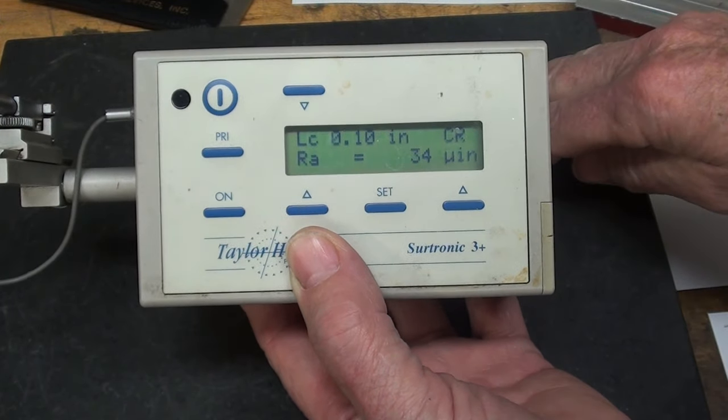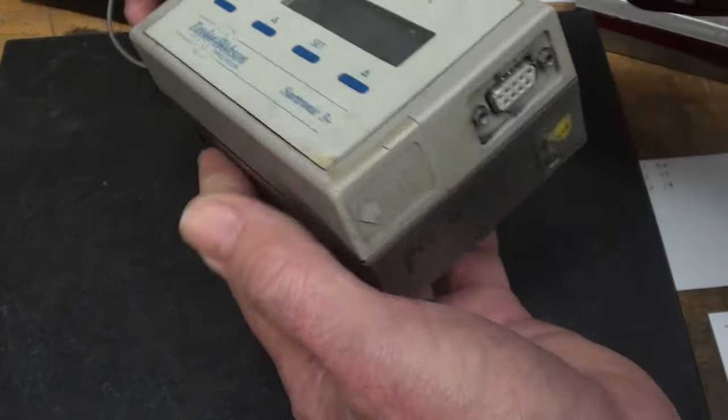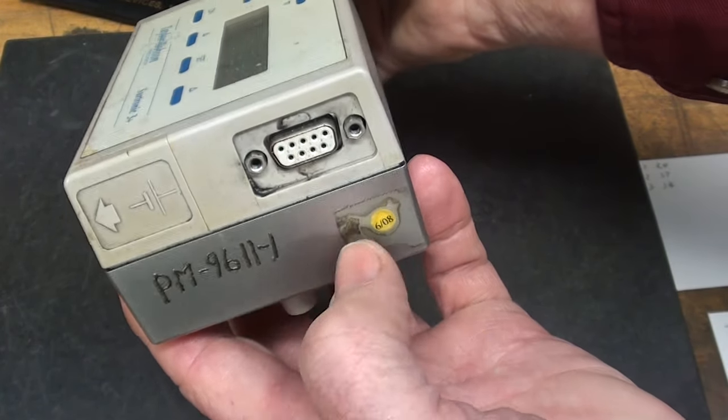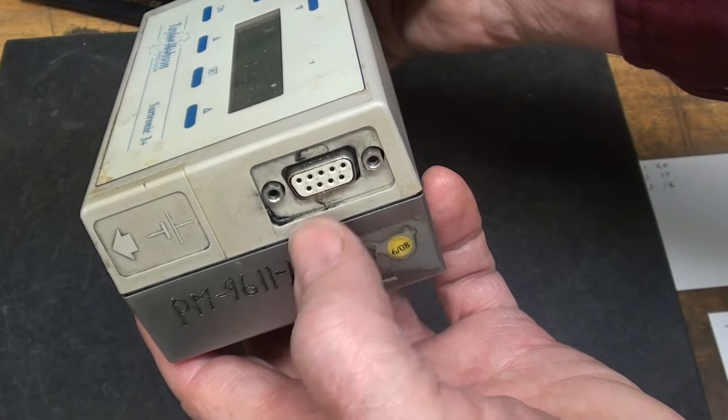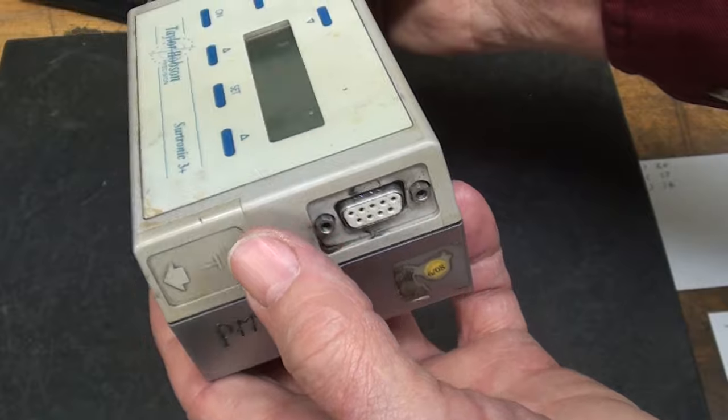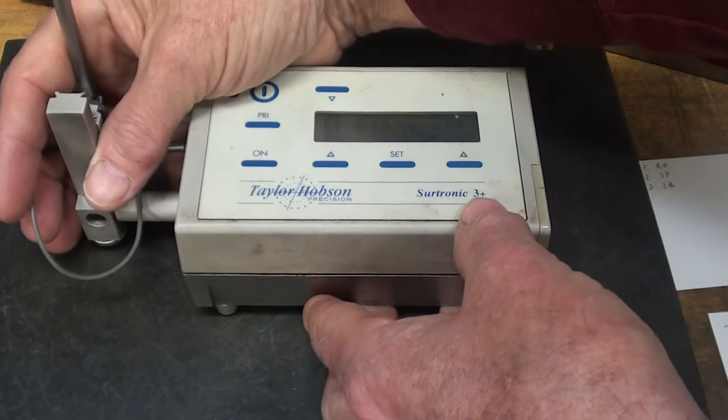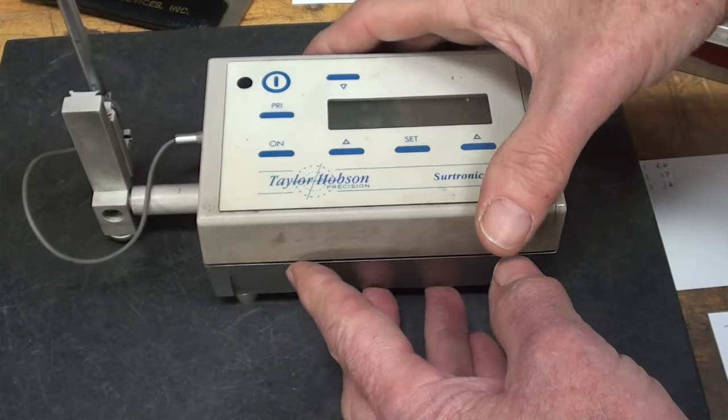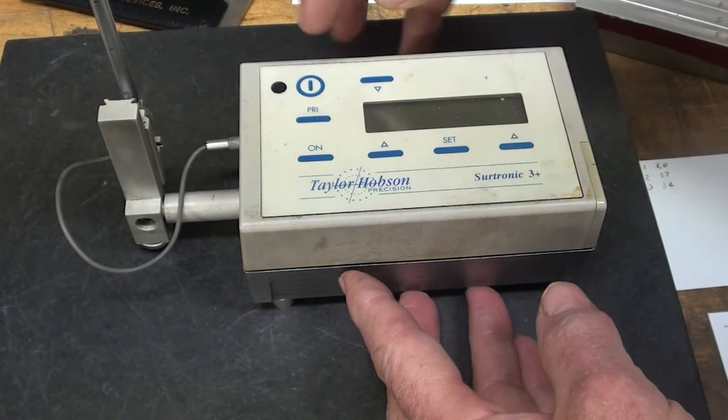It'll go off by itself. On this end again you saw that there's a port here and that could be plugged right into a printer or perhaps a computer. Graphs and prints can be made of the work and the samples that you are testing. Now how does this work? Notice when I turn it on here and get it traveling.